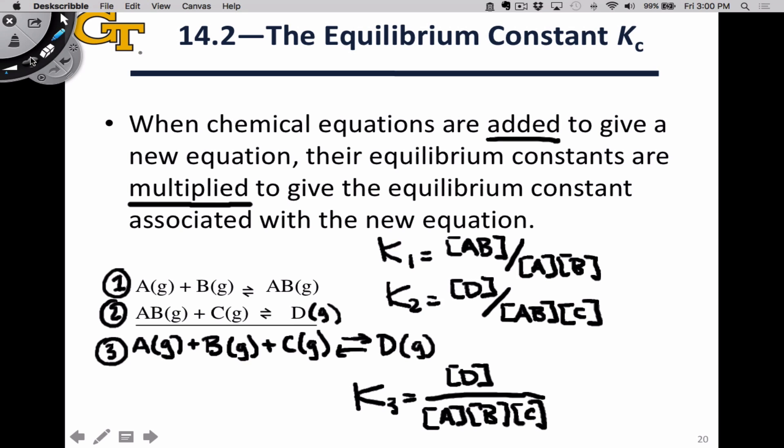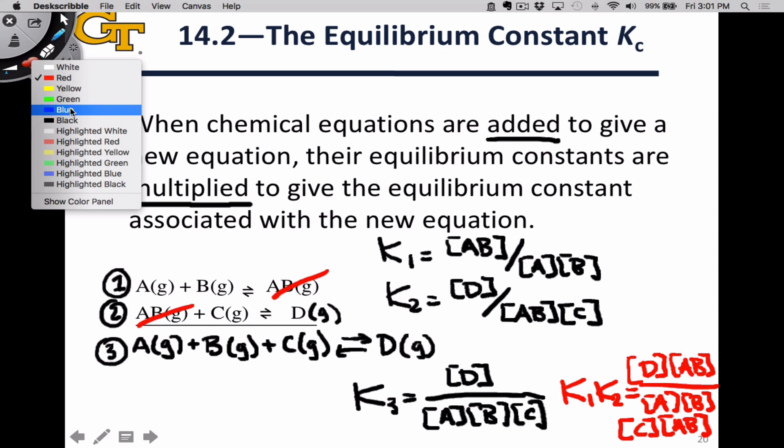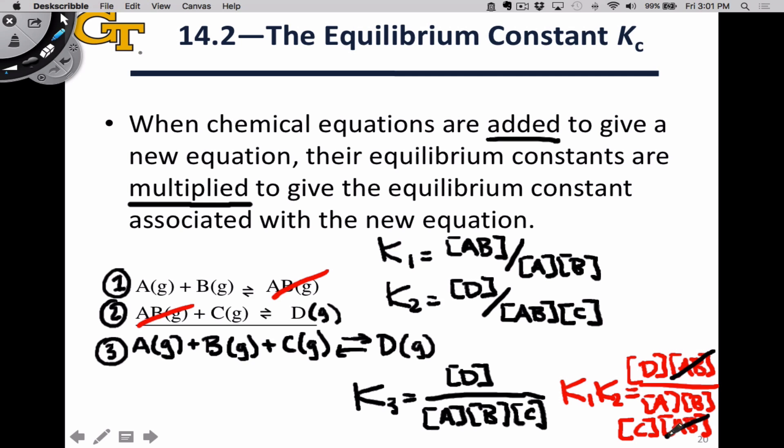Now the thing to notice is that when we add these two reactions, the AB molecules cancel, and when we multiply K1 times K2, we actually end up with the expression on the right hand side of this K3 equation. We end up with D times AB in the numerator. We end up with AB, and I'm just going to start stacking terms down here because I'm running out of room, and C as well as an AB factor in the denominator, and the two AB factors in the numerator and denominator divide out just as they subtracted out when we added the equations, and we end up with an expression that's simply equal to what's here, the concentration of D divided by the concentration of A times B times C.